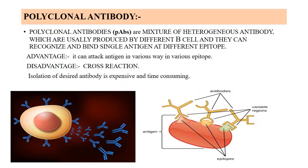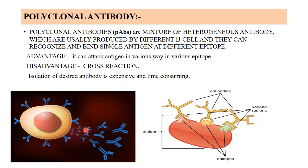For example, this antigen contains a triangular epitope, a circular epitope, and a rectangular epitope. One type of antibody recognizes the triangular epitope, another recognizes the circular epitope, and another recognizes the rectangular epitope. These antibodies all recognize the same antigen but at different epitopes — these are the polyclonal antibodies.